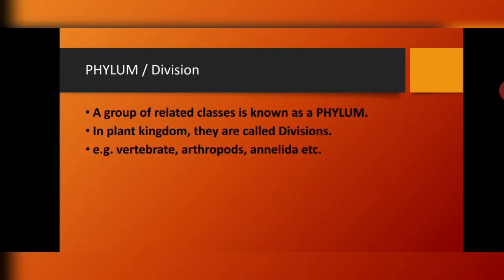Next is phylum or division. Similar classes come together to form a phylum. In the plant kingdom, we use the term division instead of phylum. Examples of phyla include Vertebrata, Arthropoda, and Annelida. Divisions include Bryophyta, Thallophyta, Pteridophyta, Gymnospermae, and Angiospermae.